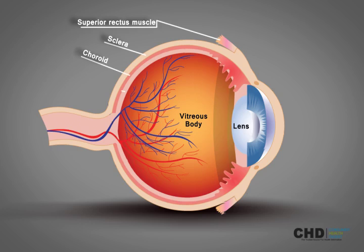The choroid, also referred to as the choroidea or even choroid coat, is the vascular layer of the eye. The retina is the light-sensitive layer of tissue in the back of the inner eye. It works like the film in a camera.